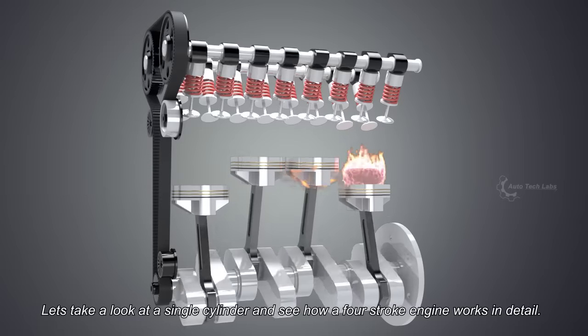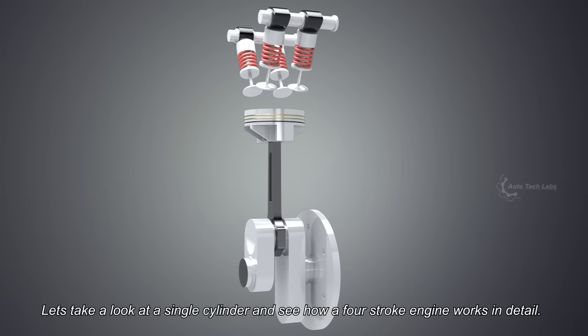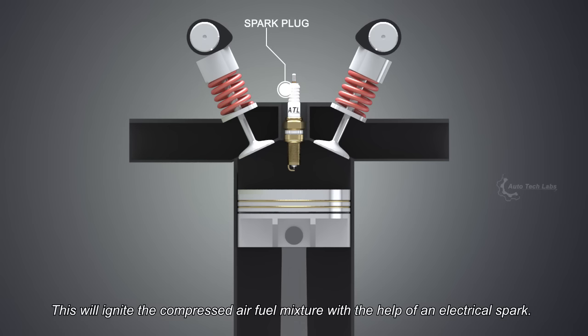Let's take a look at a single cylinder and see how a 4-stroke engine works in detail. In order to ignite the air fuel mixture, a spark plug is used. This will ignite the compressed air fuel mixture with the help of an electrical spark.